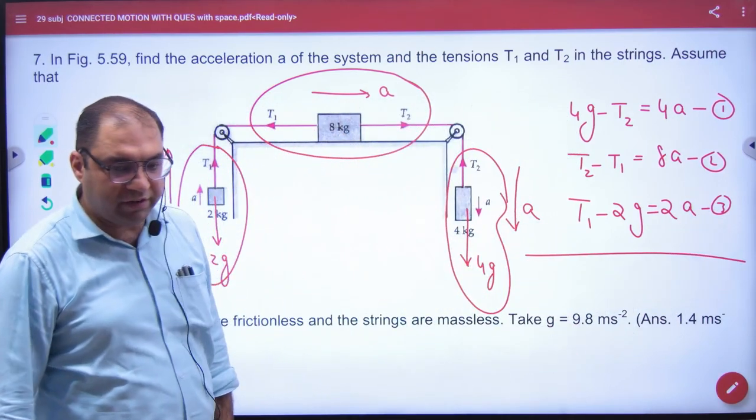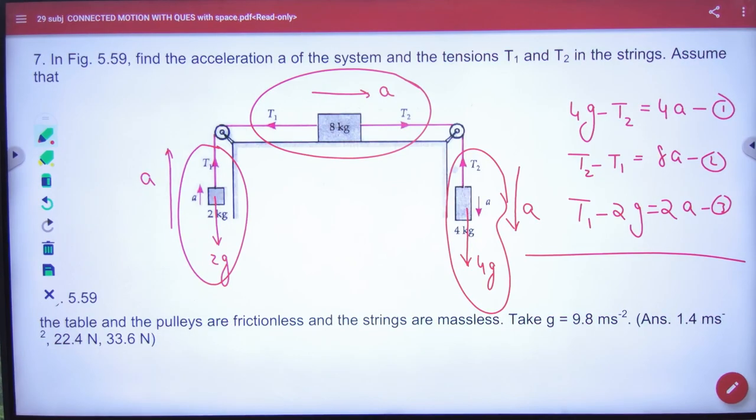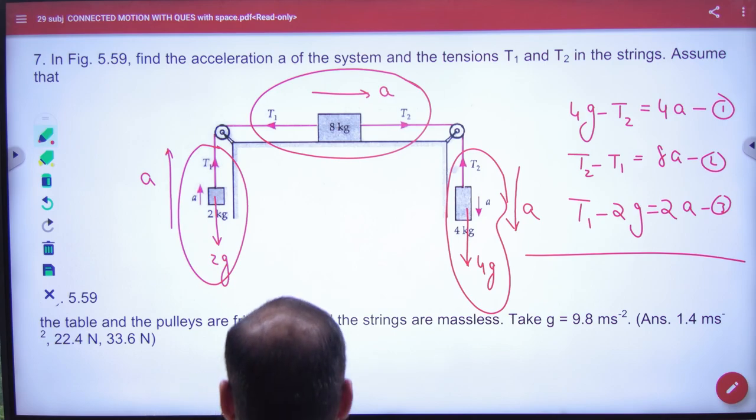Solved by T1, T2 will cancel A. If A comes, T1, T2 can be calculated. Okay? So clear here? Solved by T1, T2 can be calculated.